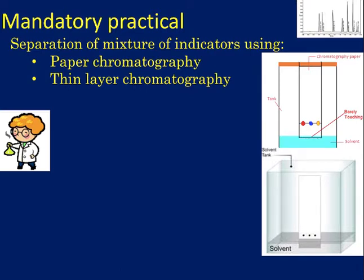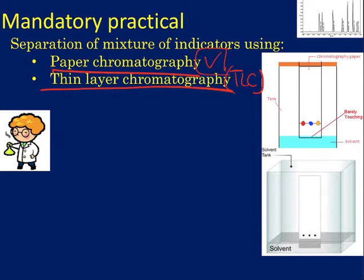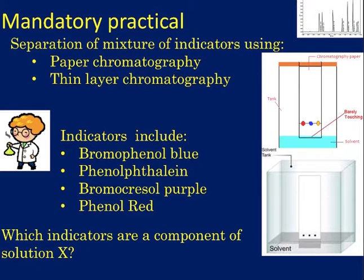There is a mandatory practical associated with this and in your question it will always give you a choice of whether or not you would use paper chromatography or thin layer chromatography, which can be called TLC. We will always do paper chromatography because it's quicker, easier, you get a better result, and you don't need lots of organic solvent. You have a mixture of indicators — it may be all four indicators listed, or it may be two of them — and you would run all four plus your mixture to compare and work out which indicators are present.